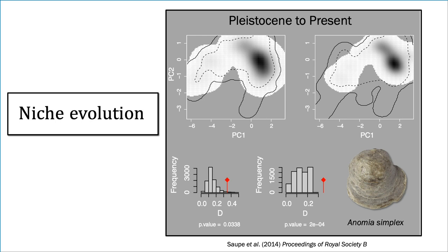I compared the niche model estimates generated in each time slice in multi-dimensional environmental space — shown here for Anomia simplex, a bivalve species. I'm showing the first two principal component axes in environmental space, with darker black indicating higher environmental suitability. What hopefully becomes obvious is that the black area is the same in both the Pleistocene and the present for this species. I found remarkable similarity or stability in the niches of these species over the last 3 million years.